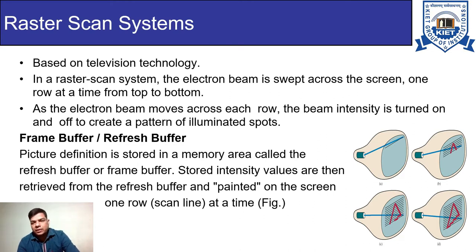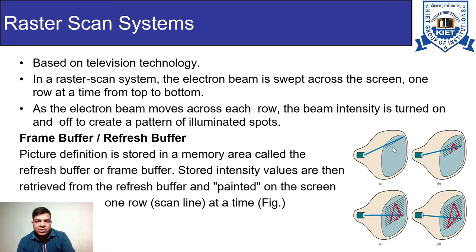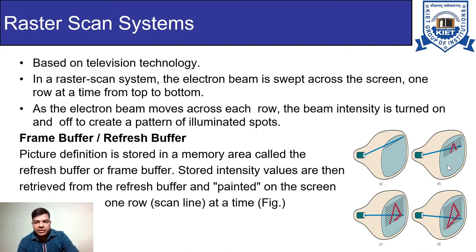Here is the diagram of the raster scan system. You can see that the electron beam is moving from left to right along the scan lines. The intensity of the electron beam can be on or off depending on the picture. Whatever portion of the picture is falling on the screen, at that portion the intensity of the electron beam is kept on, and where there is no image or object, the intensity of the electron beam is off.